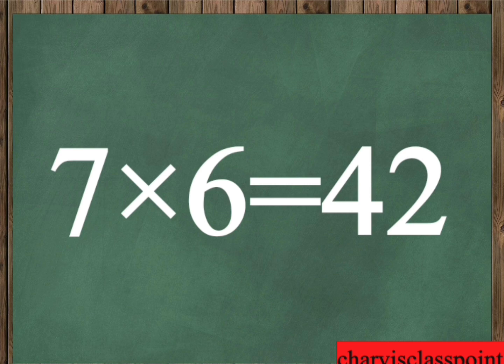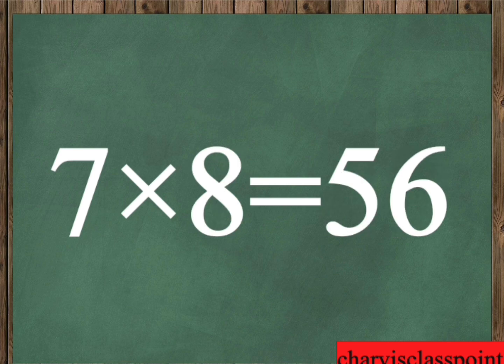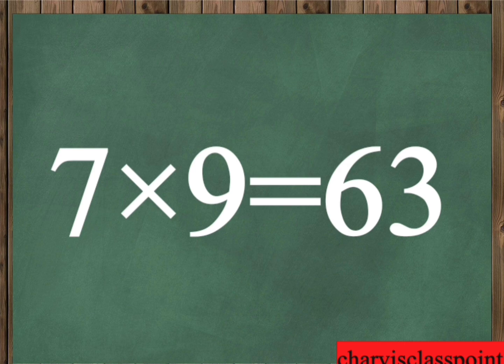Seven to six is forty-two. Seven to seven is forty-nine. Seven to eight is fifty-six. Seven to nine is sixty-three. Seven to ten is seventy. Seven to seven is eighty.